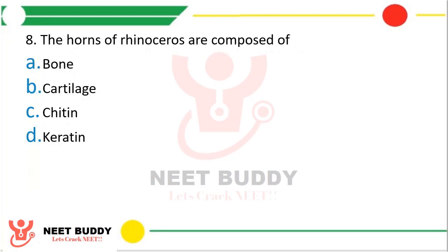Question: The horn of rhinoceros is composed of — option A, bone; option B, cartilage; option C, chitin; option D, keratin. The correct answer is option D, that is keratin. The nails and hairs are also made up of keratin.